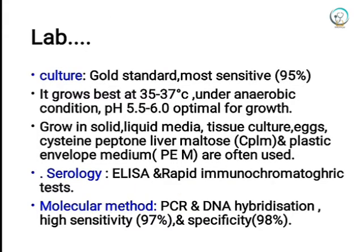Culture is considered the gold standard and most sensitive method. The organism grows best at 35 to 37 degrees Celsius under anaerobic conditions, with an optimal pH of 5.5 to 6. It is grown in solid media, liquid media, tissue culture, and eggs. Commonly used media include peptone-liver-maltose medium and the plastic envelope medium.